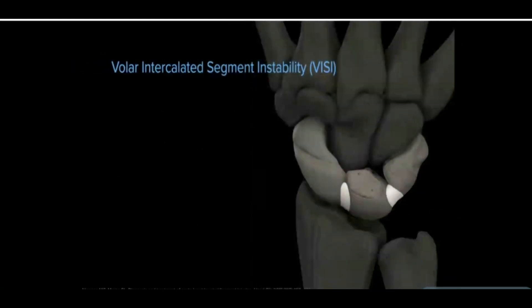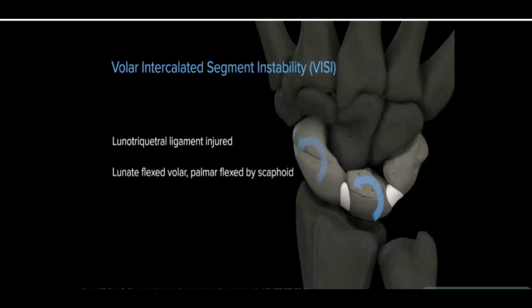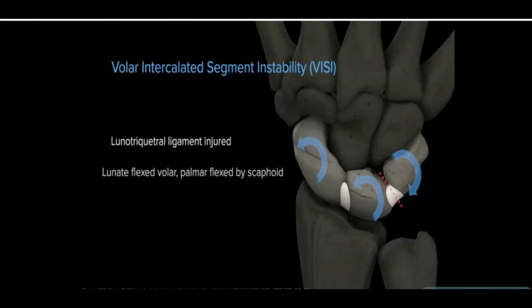Volar intercalated segmental instability, or VISI deformity, can also be caused by advanced lunotriquetral injury. In VISI, the lunate is pulled volar and flexed by the scaphoid and the intact scapholunate ligament, causing the instability.